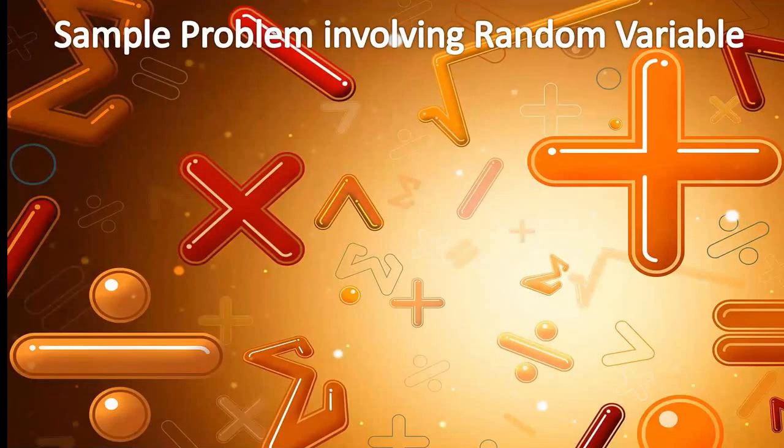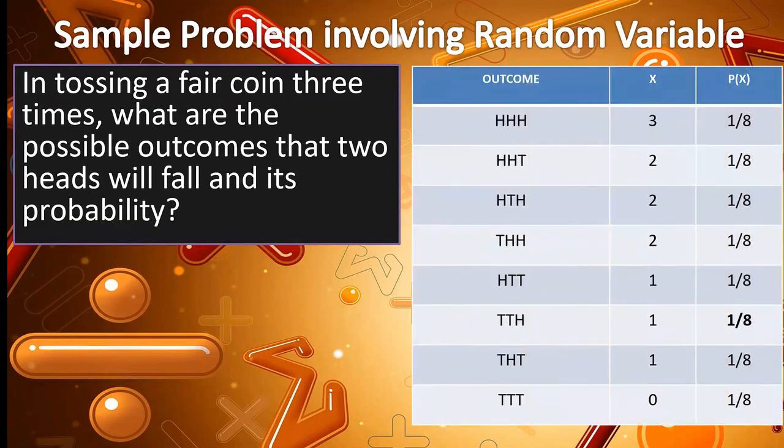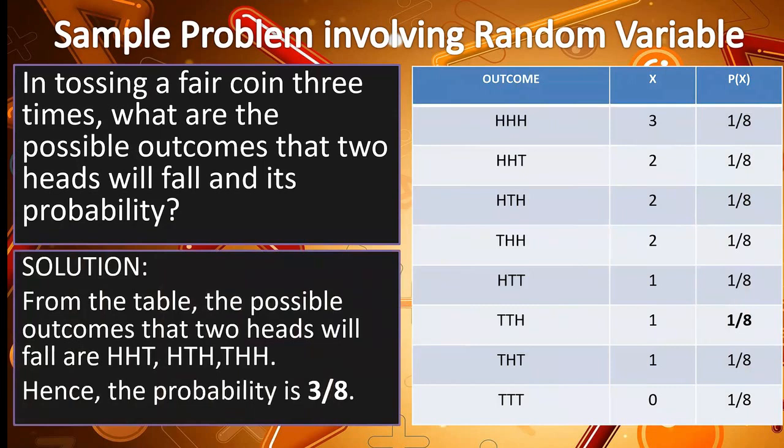So, let's have a sample problem involving random variable. Here's the situation. In tossing a fair coin 3 times, what are the possible outcomes that 2 heads will fall and its probability? We have here the table that shows the possible outcomes when you toss a coin 3 times. As you can see, there are 8 possible outcomes that might occur. Out of these outcomes, only 3 have 2 heads.